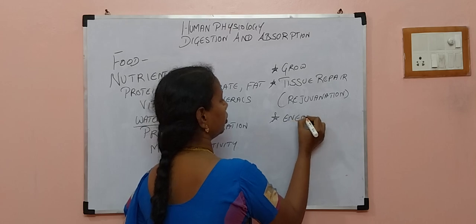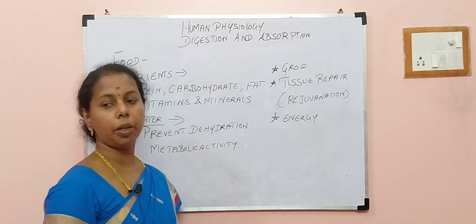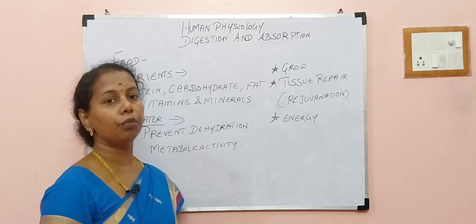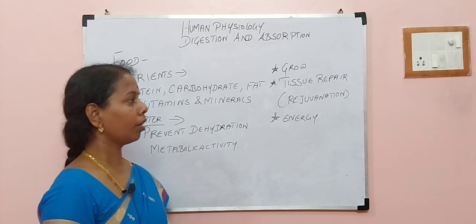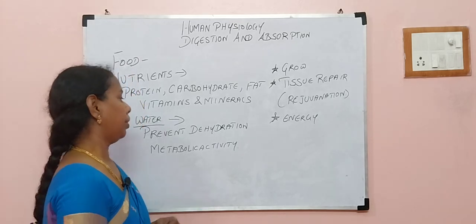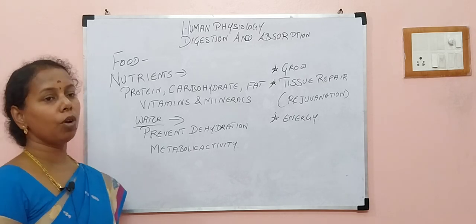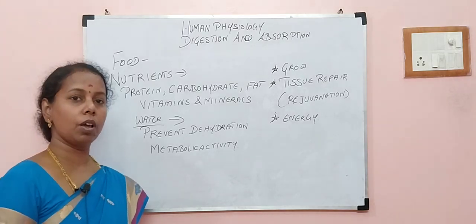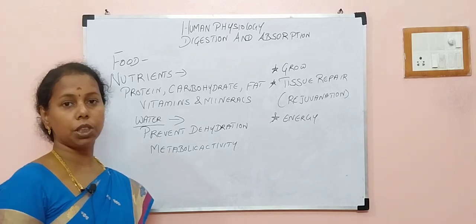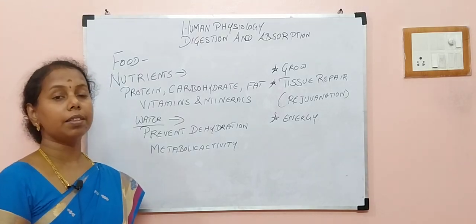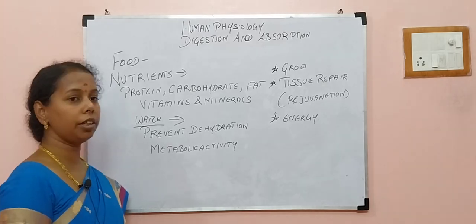Of course, energy. So these things we are obtaining only from our food. This nutrition involves 5 major steps. So what are those 5 major steps? Ingestion, digestion, absorption, assimilation, and egestion.